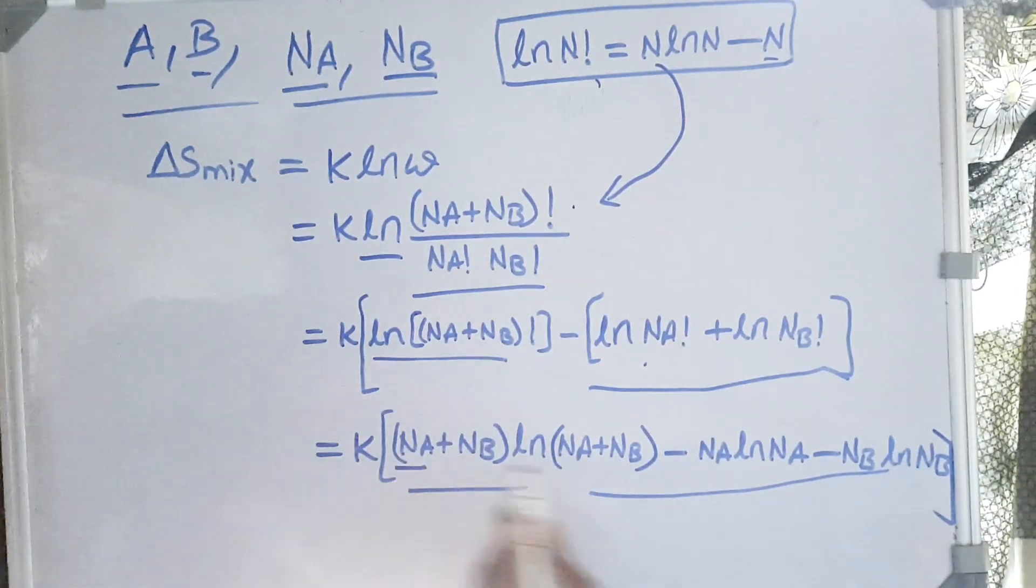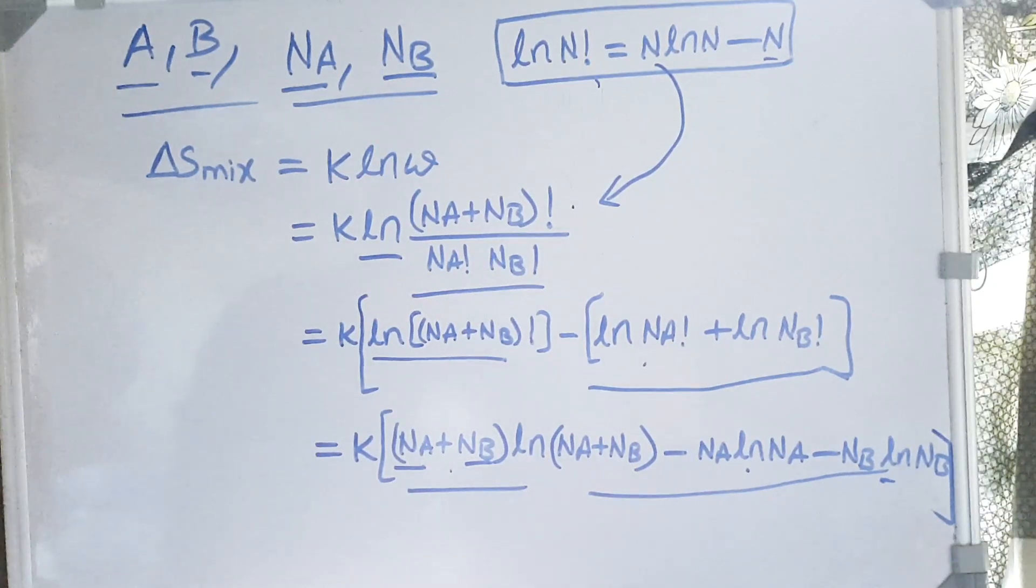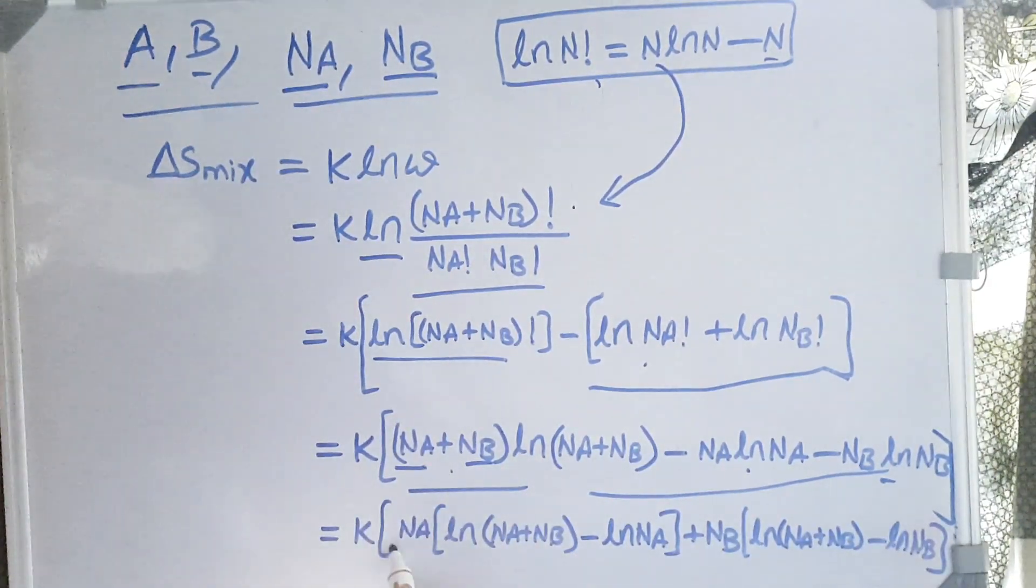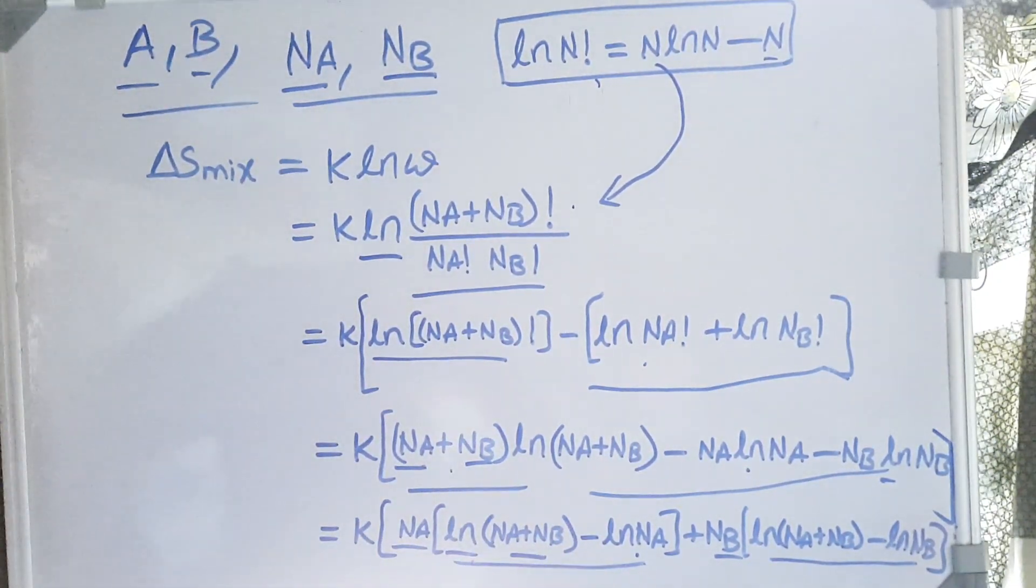Here we can take Na common from this and this, and Nb common from this term and this term. So after taking Na common we'll get this, and Nb common we'll get this. Here ln A minus ln B, so we can apply ln A minus ln B equals ln(A/B).